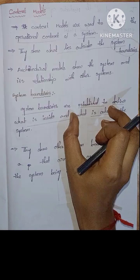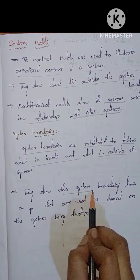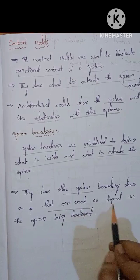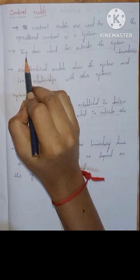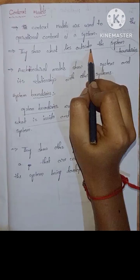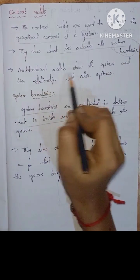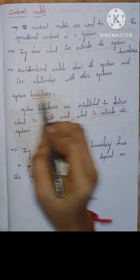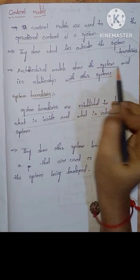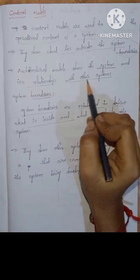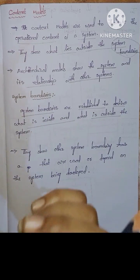The system boundary shows other systems that are used or depend on the system being developed. So they show what lies outside the system boundaries. Architecture models show the system and its relationship with other systems.